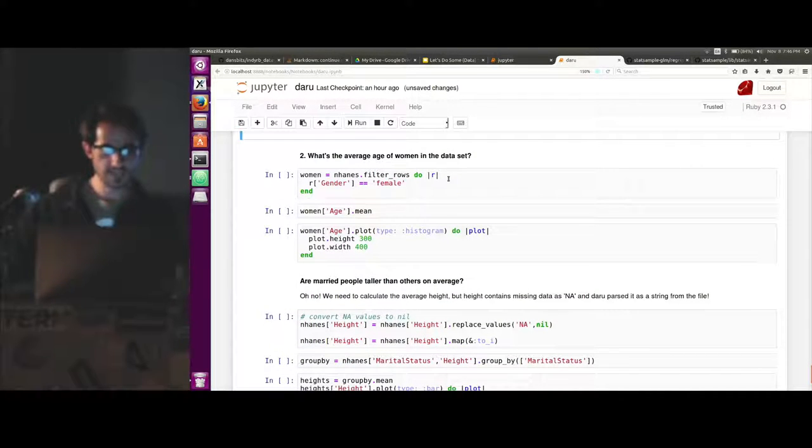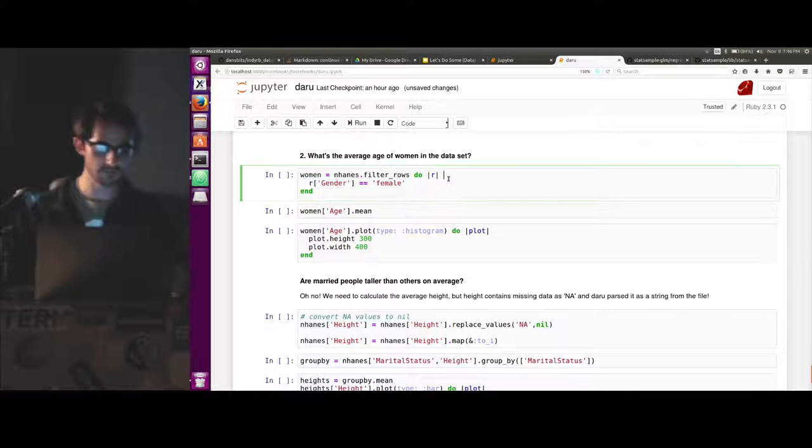Second, what's the average age of women in this data set? So we need to subset to only women and then do something similar to the previous one. We can call NHANES our data frame dot filter rows, kind of like before. And then we say where gender is female.